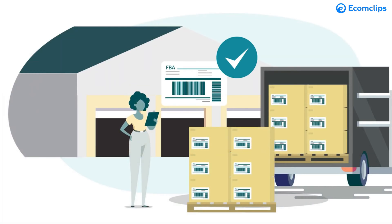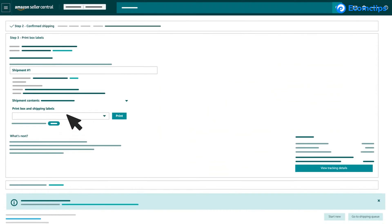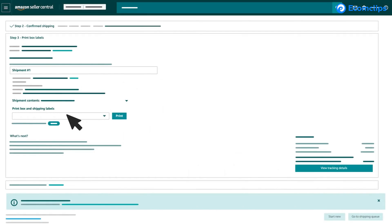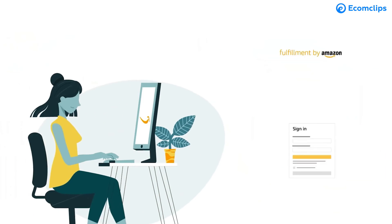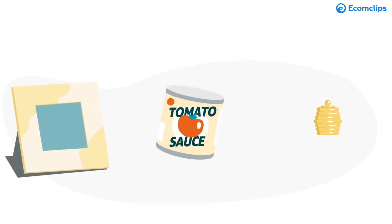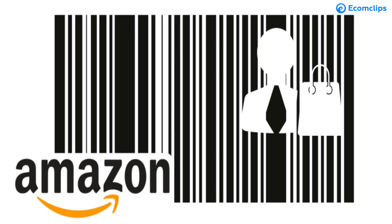The next thing that will cross your mind is: how can you get an FNSKU? Keep watching this tutorial to learn more about how to create the FNSKU barcode. If you are an Amazon seller with FBA inventory and Amazon barcode enabled, each unit will have its own FNSKU.